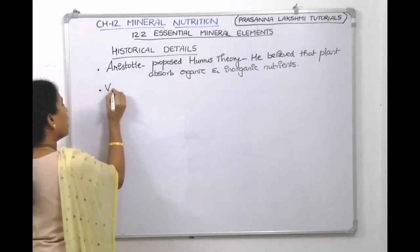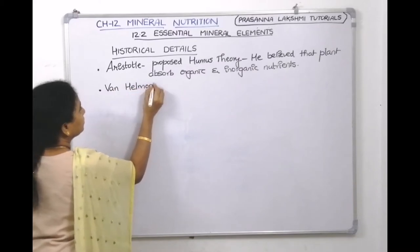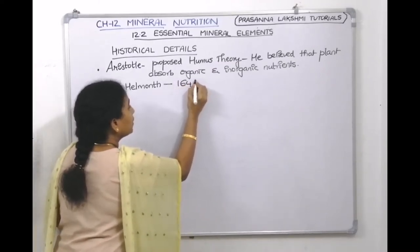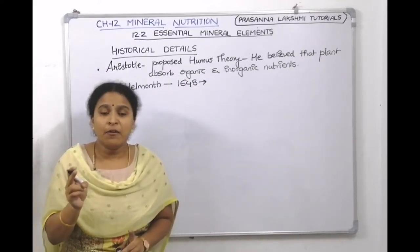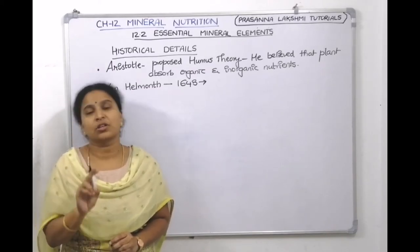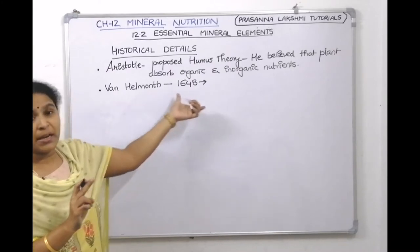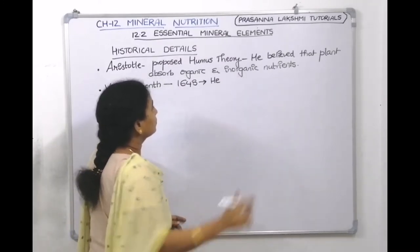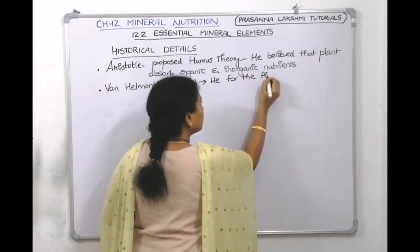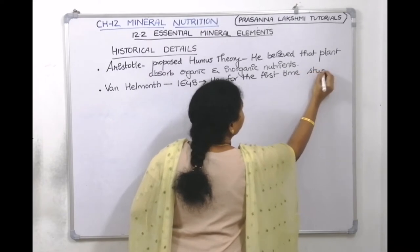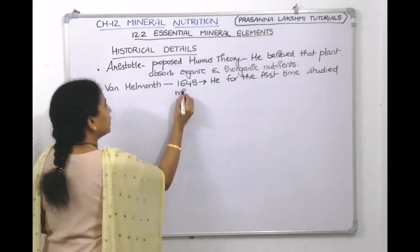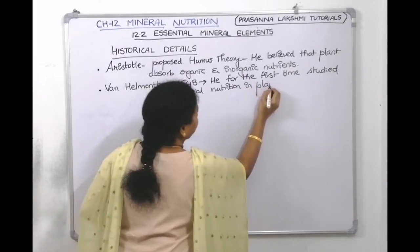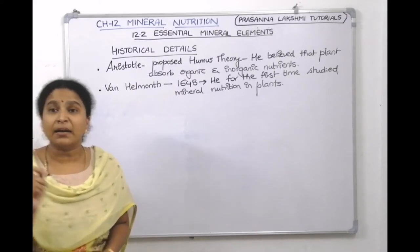The next scientist is van Helmont. Van Helmont, in the year 1648, for the first time studied mineral nutrition in plants. He felt that minerals are required by the plants.